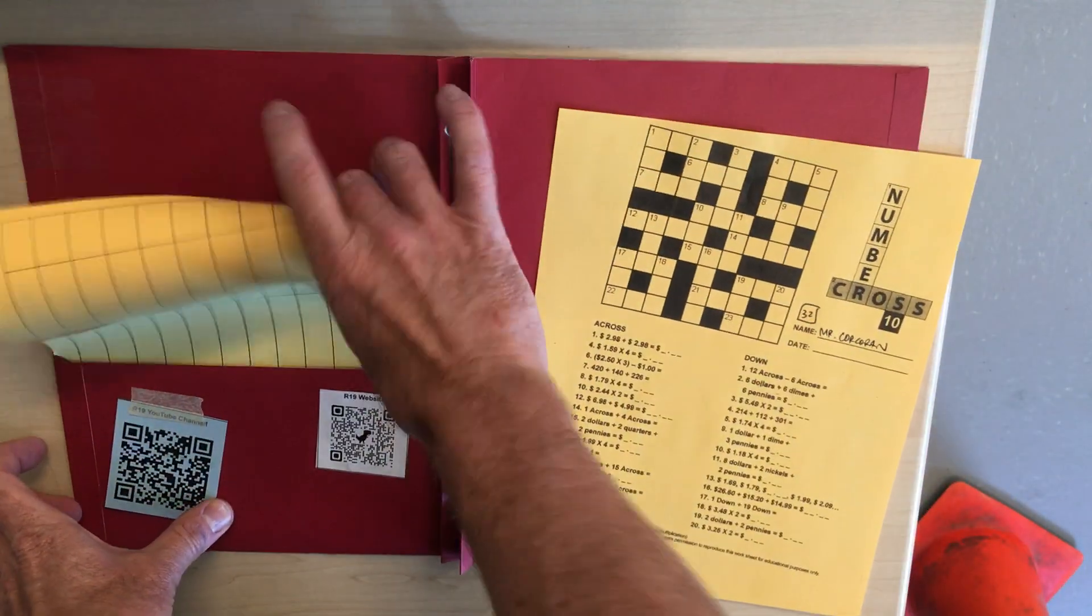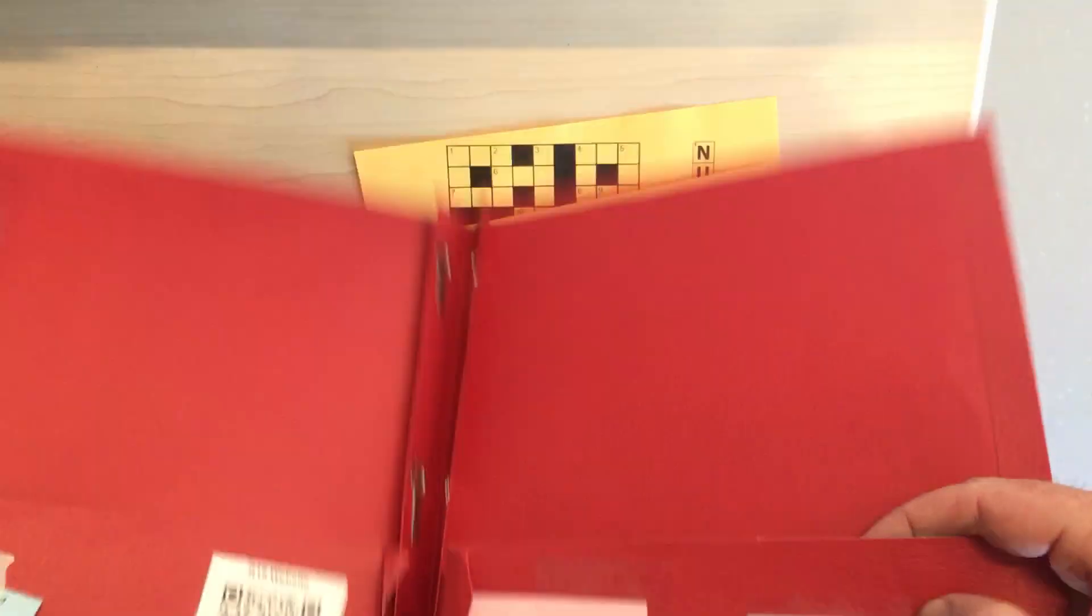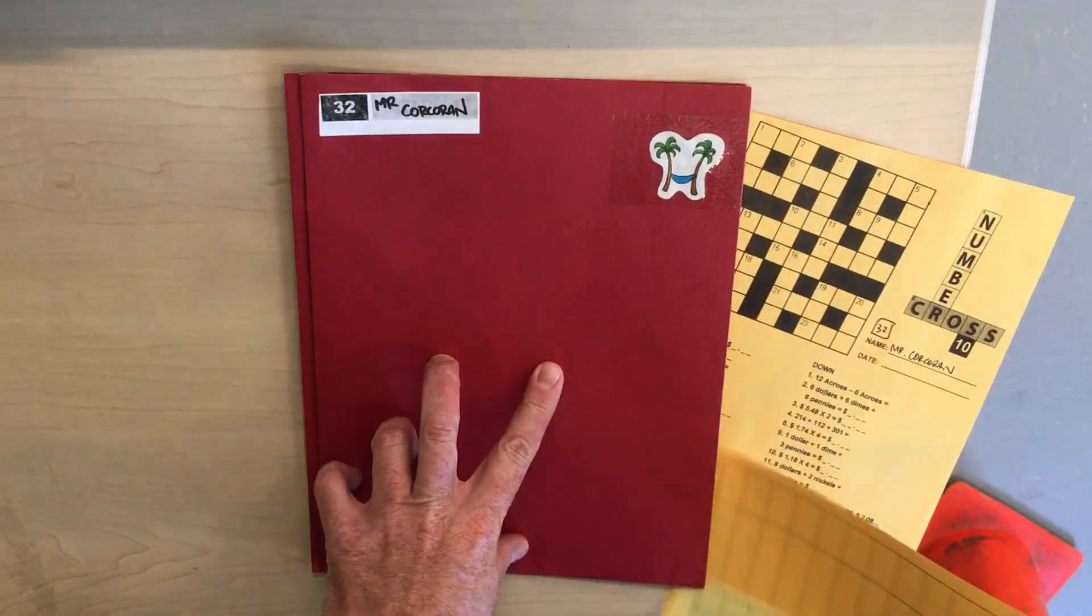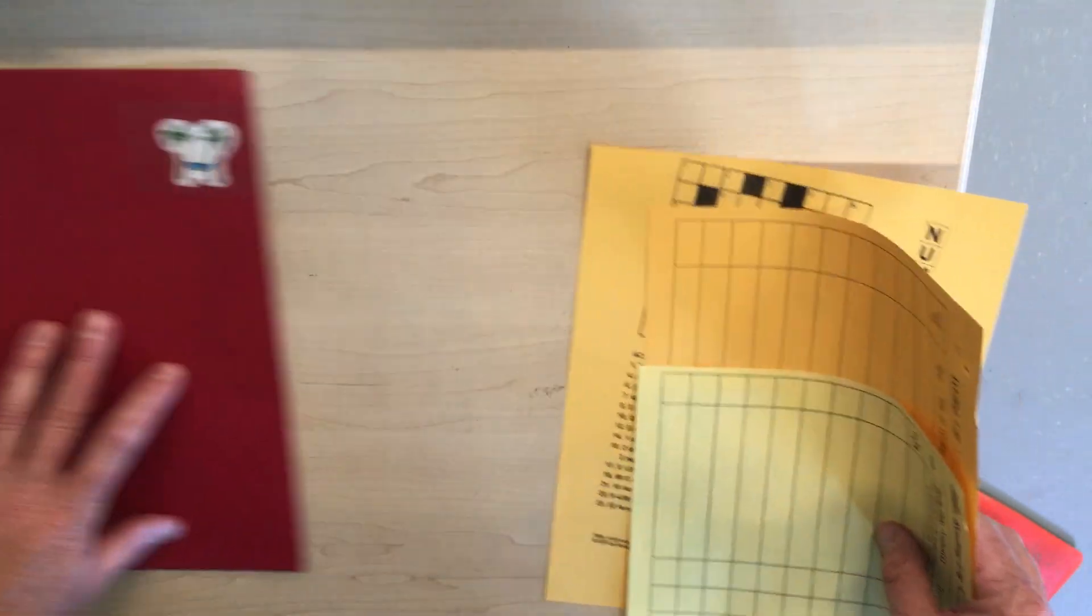In your red folder these things should go home every night. Nothing extra. Red folder. Your name and number. Stickers.